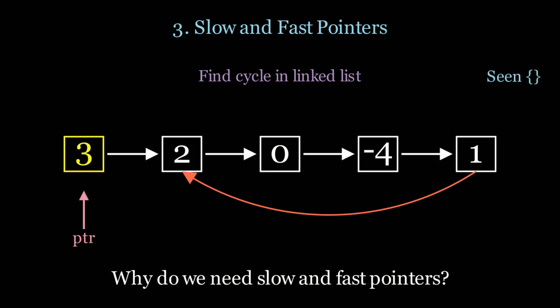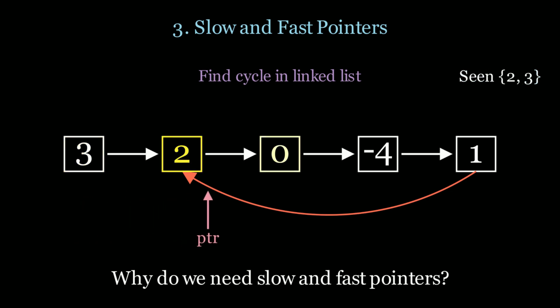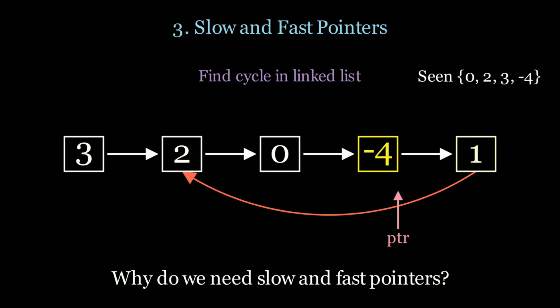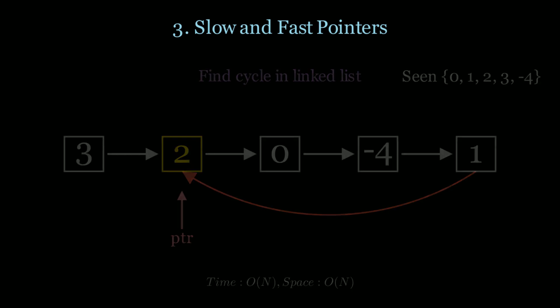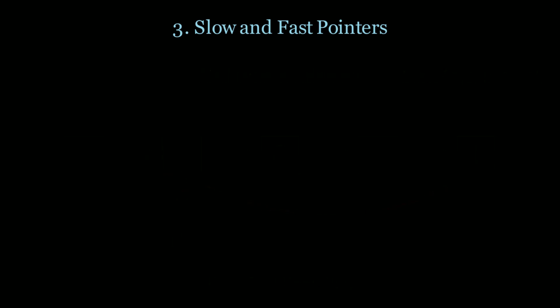The traditional way is to use a hash set — for every node you iterate through, you add it to the hash set. If you've seen that node before, you know you found the cycle. However the time and space complexity is O(n) for this. Can we do this in one pass using constant space? Let's see how that looks.